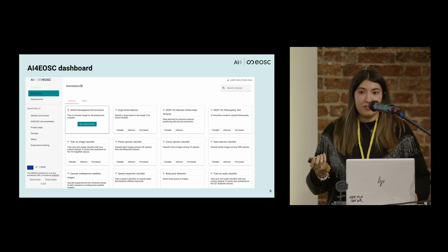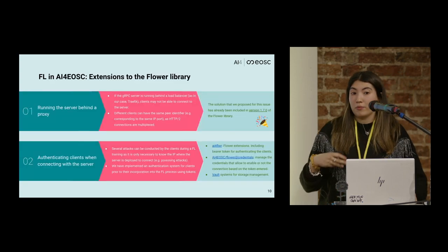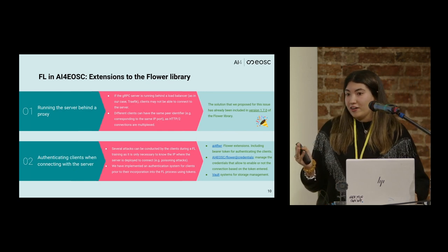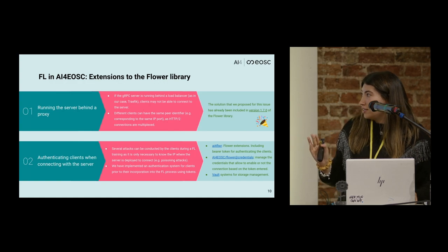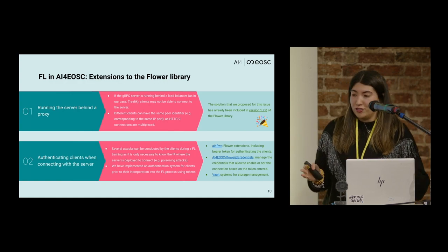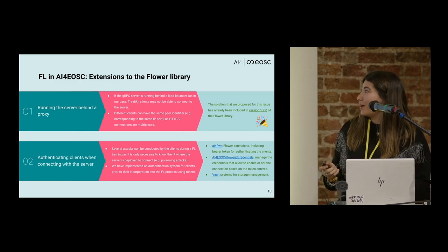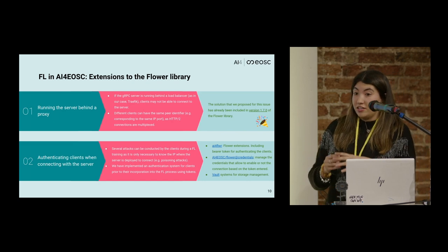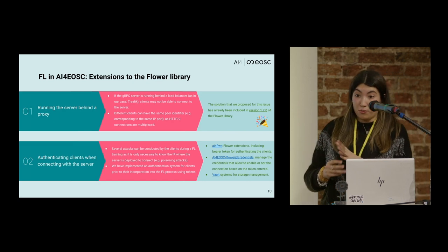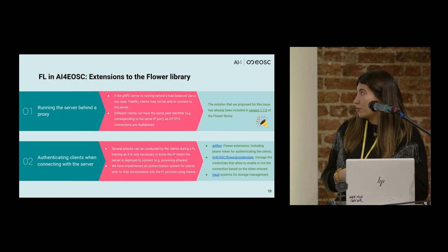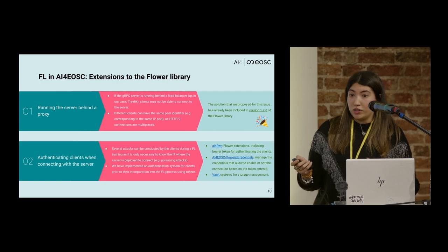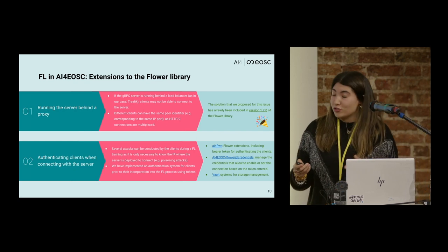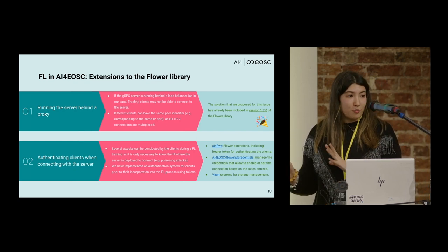Now let's focus on federated learning and how we are implementing it in the platform. When we started, we encountered one problem related to the server and the proxy we were using. With Flower, we use gRPC, and in our case the gRPC server was running behind the proxy — in our case, Traefik, which acts as a reverse proxy. Clients were not able to connect with the server. We performed some modifications to the Flower library, and the solution we proposed is already included in the current version of Flower. First problem solved.